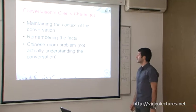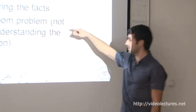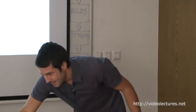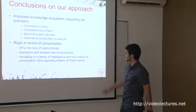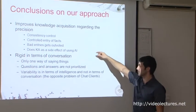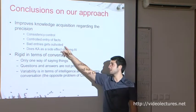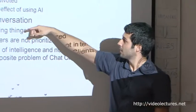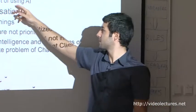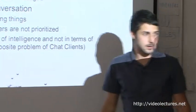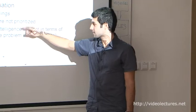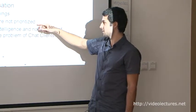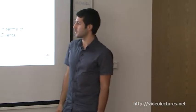The problems with these clients are maintaining the context of the conversation, remembering facts, and the Chinese room problem — they don't actually understand what they're talking about, it's just scripted replies. Regarding our approach: ontology-driven knowledge acquisition improves precision because of consistency control and controlled entry. Because of crowdsourcing, bad entries get removed. The good thing is it can do knowledge acquisition as a side effect of doing something else. But it's rigid in terms of conversation — only one way of saying things — and we don't have a way yet to weight the questions, to know which ones to show in what order and when.